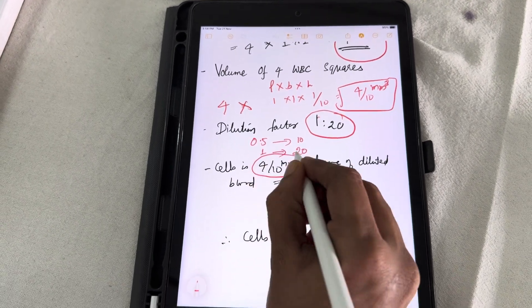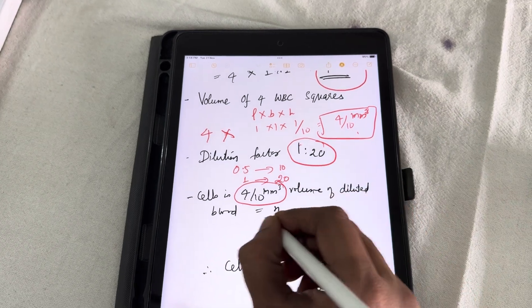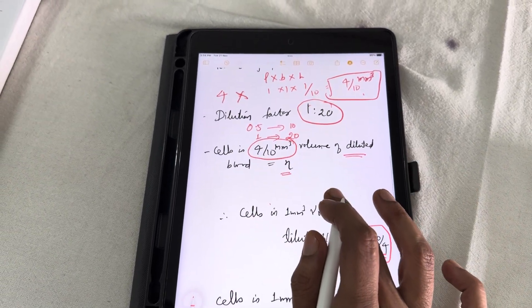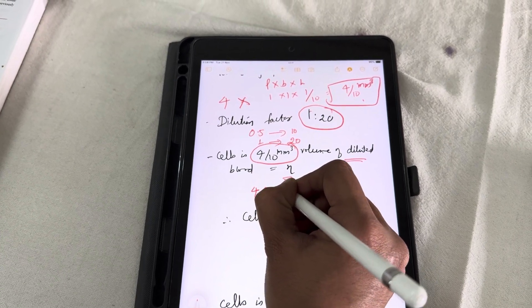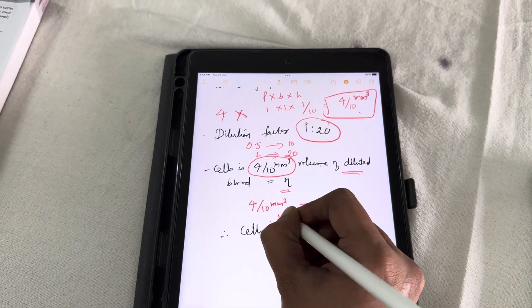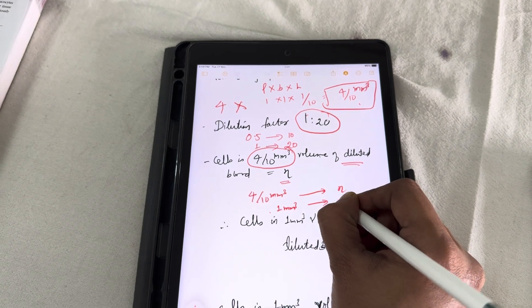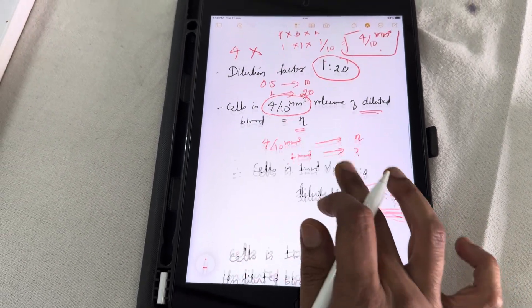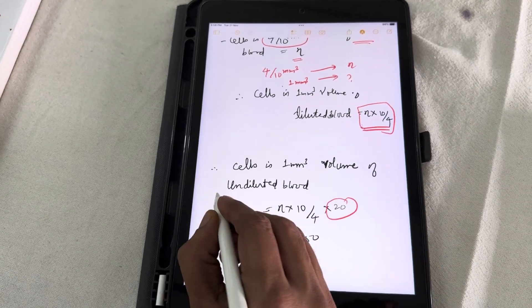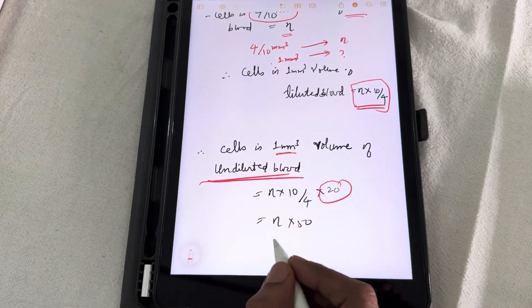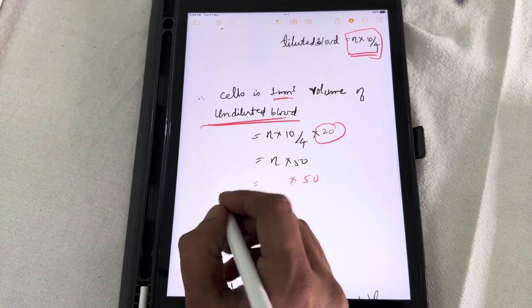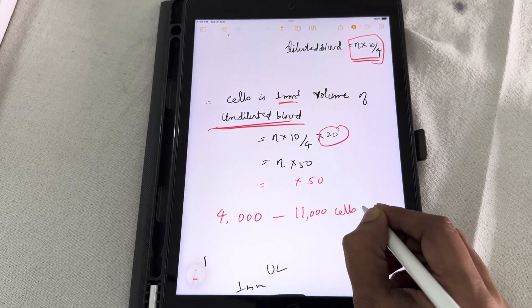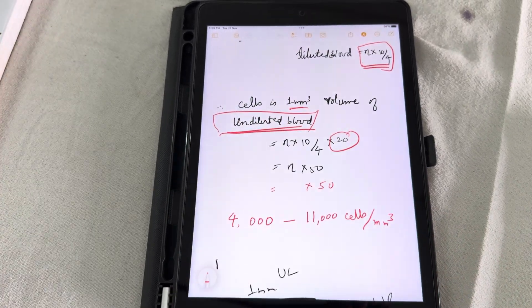Cells in 4 by 10 cubic millimeter, that is in all 4 WBC squares volume is how much? N. N is A plus B plus C plus D that we have already seen. That is in the diluted blood. Suppose in this volume that is 4 by 10 cubic millimeter total number of cells present is N. How many cells will be present in 1 cubic millimeter volume? That will be around N into 10 by 4. That is diluted blood. But you know the dilution factor is 1 is to 20. So, again we have to multiply it with 20. You will get in undiluted blood, 1 cubic millimeter volume of undiluted blood will be having N into 50. So, whatever value you get, you have to multiply it by 50. The normal value will range between 4000 cells to 11000 cells, cells per cubic millimeter of undiluted blood that is the whole blood. This is all about the total WBC count.